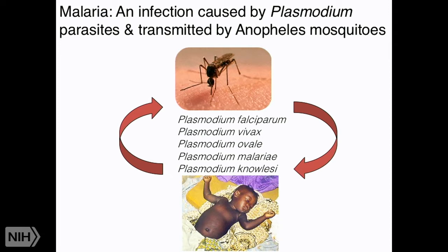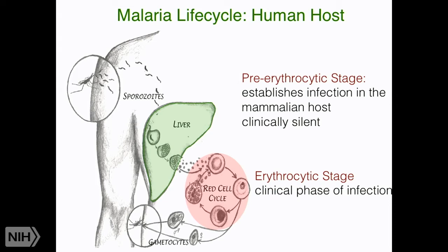To understand what Dr. Crompton and I are going to talk about today, it's helpful to go over the life cycle. In the human host, the infection can really be divided into two stages: a pre-erythrocytic stage — sporozoites and liver stages — which is responsible for establishing the infection in the host. This stage is clinically silent; there are no symptoms because parasite numbers are low. And then the erythrocytic stage, which is responsible for all clinical symptoms of infection.